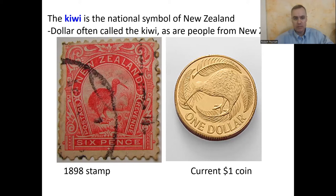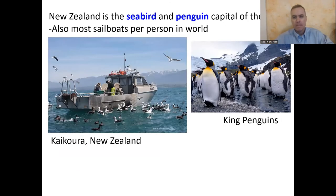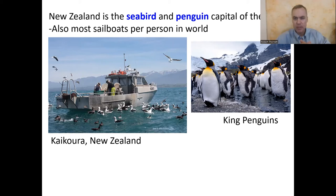The kiwi is so essential to New Zealand that it appears on the dollar coin and on stamps going back over 100 years. Not only that, it's what you call someone from New Zealand — 'this guy's a kiwi' means this person is from New Zealand. Those flightless birds include penguins — New Zealand is like the penguin capital of the world, and has more sailboats per person than any other place. Penguins are among the flightless birds found in the New Zealand zoo region.